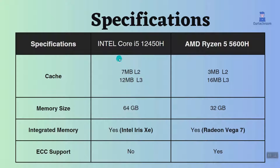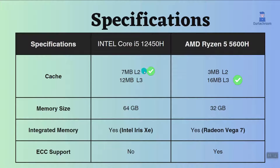The Ryzen 5 5600H comes with a bigger L3 cache compared to the Core i5-12450H. This advantage may result in slightly better performance, especially for applications that require frequent data access. On the other hand, the Core i5-12450H has a bigger L2 cache than the Ryzen 5 5600H, which may result in slightly better performance for applications that need data and instructions that aren't used often but are still required quickly.